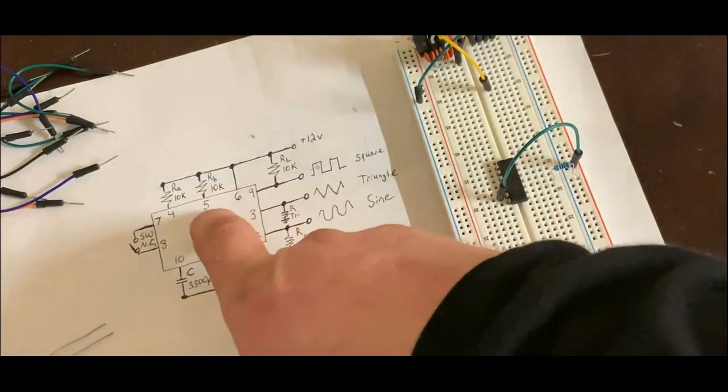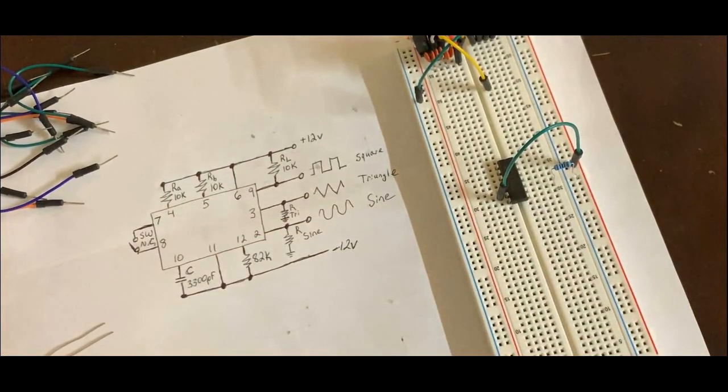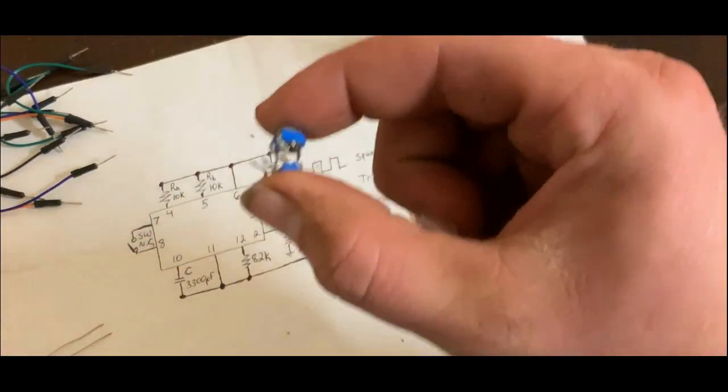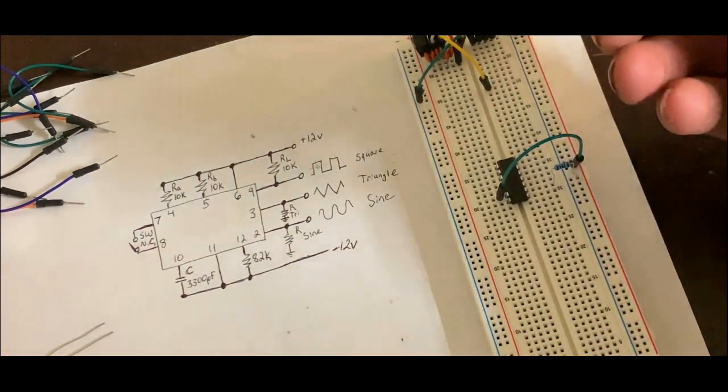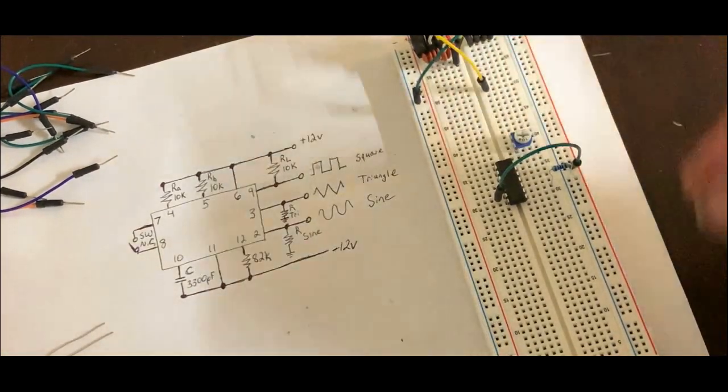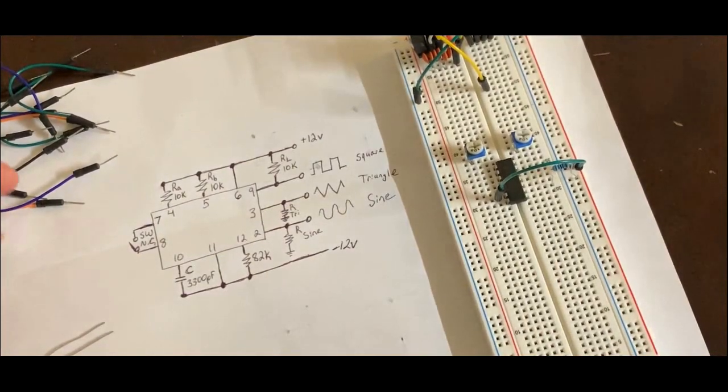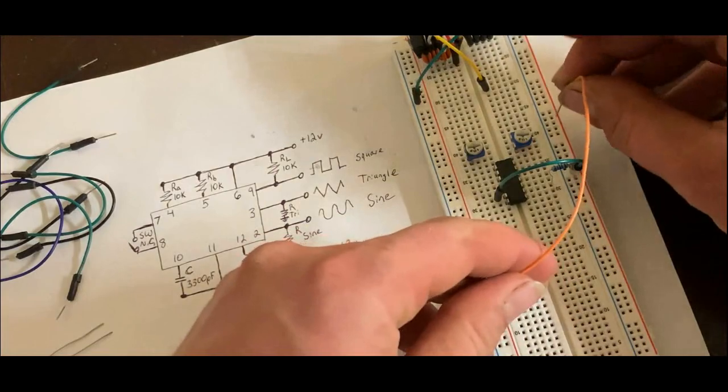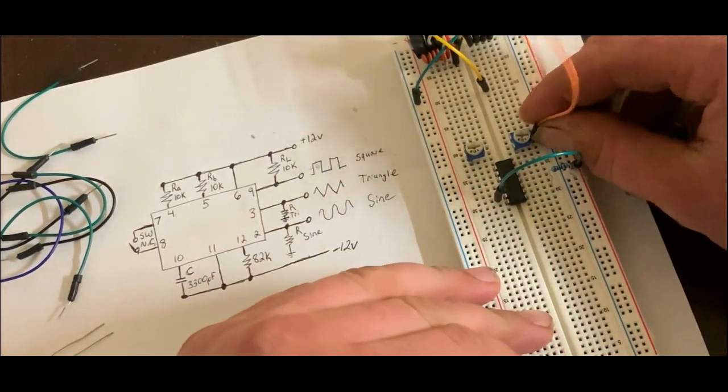And then, the next two pins, 5 and 4, are both 10K. And those two adjust your duty cycle. So I'm going to use potentiometers, a 10K potentiometer for each one of those, instead of the regular resistor. This way I can adjust it. So I'm going to place this one here and this one here. And then, I'm going to go from plus 12 volts to the top pin on this one.